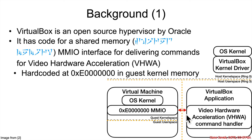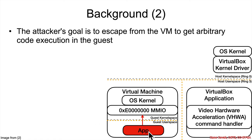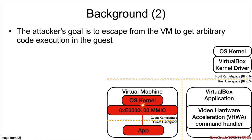That is an attack surface, and therefore what crosses it is attacker-controlled input data. As usual, it is the attacker's goal to escape the virtual machine and break out. If there were an application running inside the VM, it would send some attacker-controlled input in and break into the kernel.